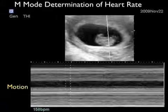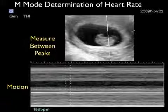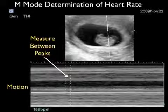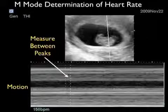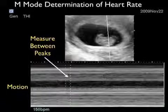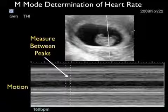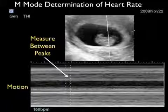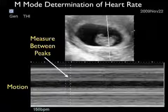Here we're going to use M mode to determine the fetal heart rate. Notice the fetus is zoomed up towards the top of the image, and we're placing the M mode caliper directly over the fetal heart. Towards the bottom, we see the M mode motion strip with little waves showing the motion of the fetal heart. On this particular ultrasound machine we measure between each peak, and we can see a heart rate determination of 158 beats per minute. This is something we can print out and place on the chart to show that at the time we saw the baby, there was an actual heartbeat.